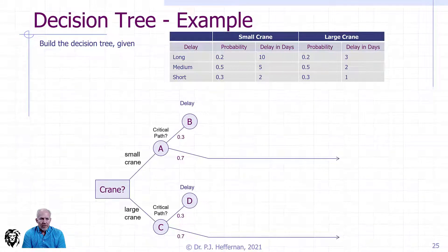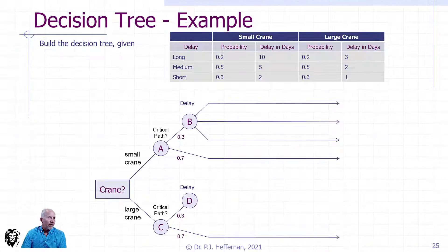If we are on the critical path, we have to concern ourselves with the delay. There's a probability of how much that delay is - 0.2, 0.5, or 0.3 for long, medium, or short delay. We have three branches off of the node reflecting the different delays. We're on the small crane path, so a long delay would be 10 days with a probability of 20%. That's right out of the table. A medium path would be 5 days at 50% likelihood, and a short delay would be 2 days at 30% likelihood.